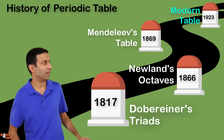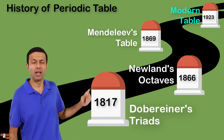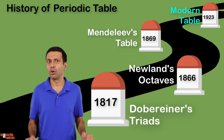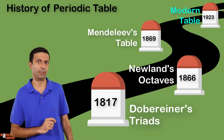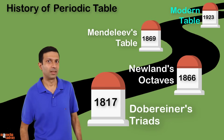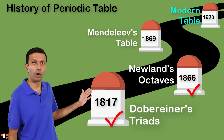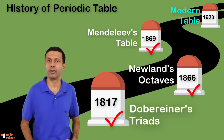Hi friends, in this video we look at the last stop in our journey, the modern periodic table. Remember in the previous videos, we discussed the earlier attempts to classify elements - that is Dobereiner's triads, Newlands' law of octaves and Mendeleev's periodic table.